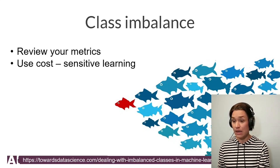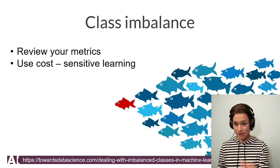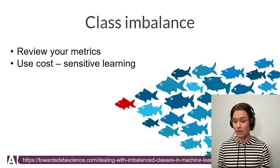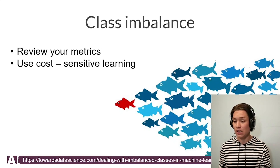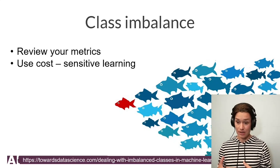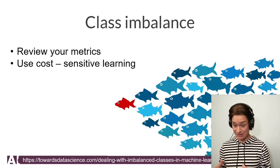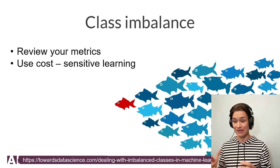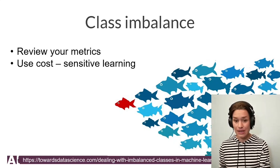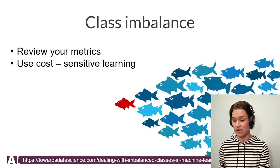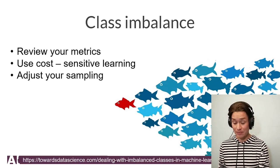We can use cost-sensitive learning. Later we're going to talk about the architecture of a neural network. We can reward the network for finding the underrepresented class, and then it looks for it more — it is rewarded for the underrepresented class.